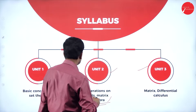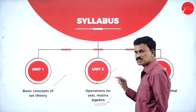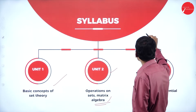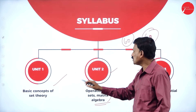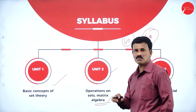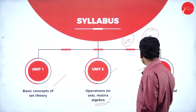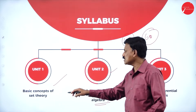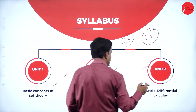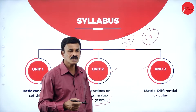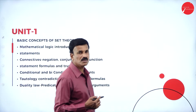These are the 3 important units which you are going to study for 60 marks. Each unit will carry 20 marks, so 20 plus 20 plus 20 equals 60 marks for the final examination. Now let us discuss in detail the syllabus. In the first unit, basic concepts of set theory, we are going to study a very important concept — mathematical logic, introduction to mathematical logic.